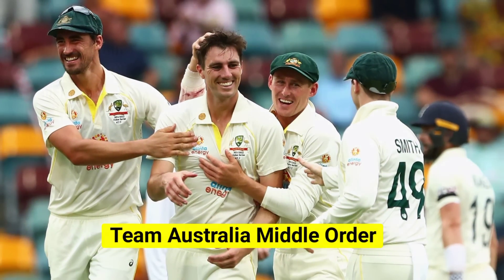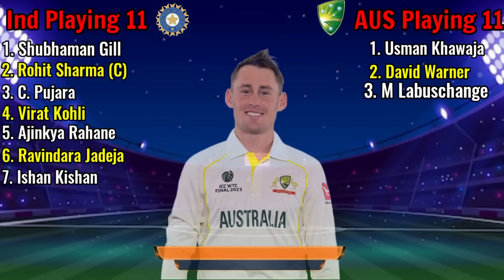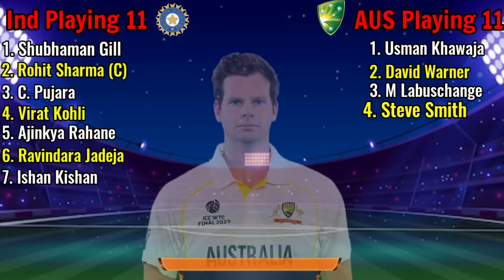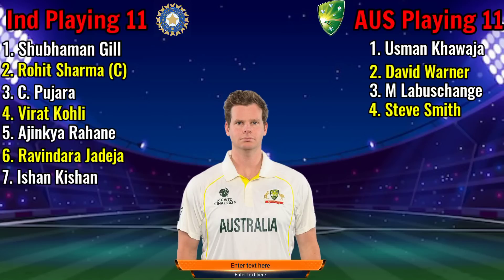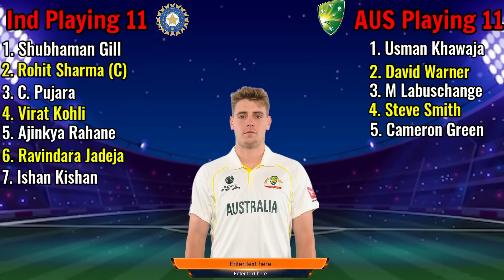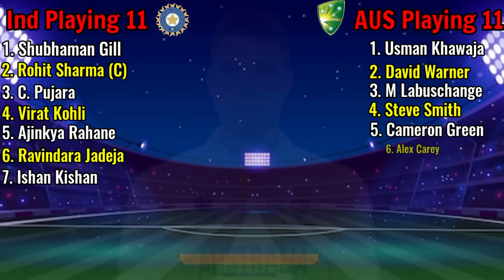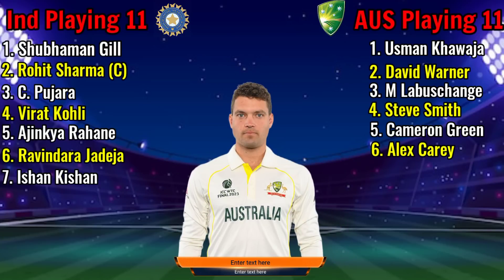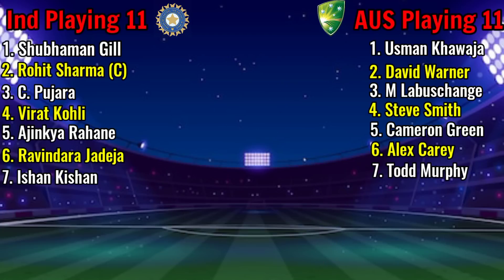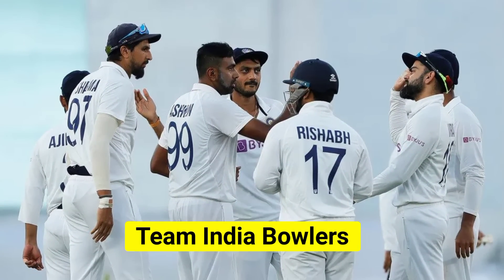Team Australia middle order: Number 3, Manos Labushchein, right-hand batsman; Number 4, Stu Smith, right-hand batsman; Number 5, Cameron Green, right-hand all-rounder; Number 6, Alex Carey, left-arm batsman; Number 7, Todd Murphy, right-hand all-rounder.